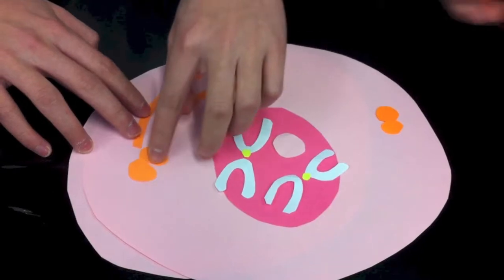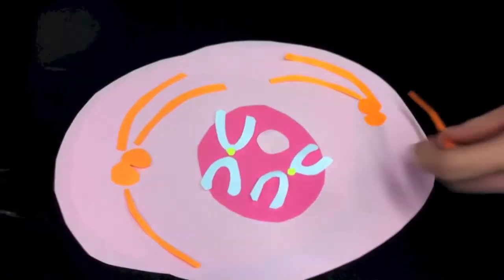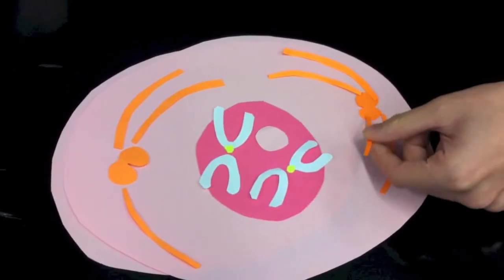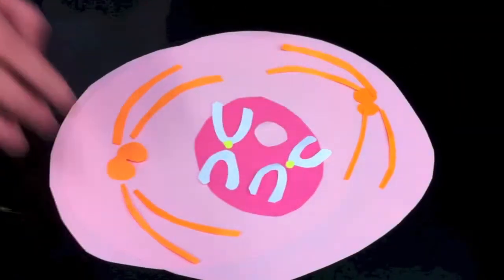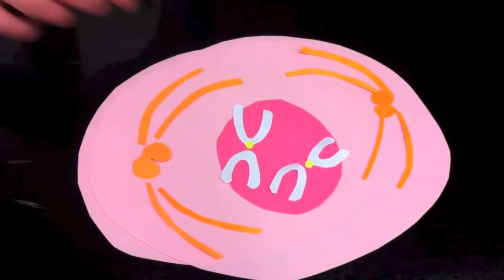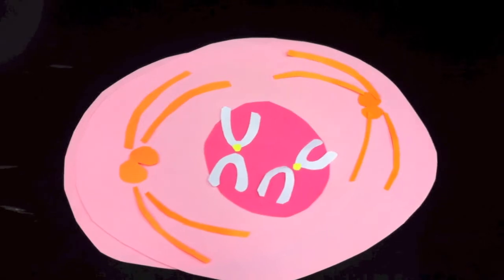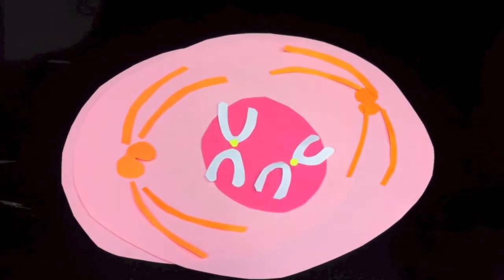During early prophase, duplicated DNA molecules coil up into chromatids, which are then joined together by a centromere to form a chromosome. In animal cells, centrioles move to the opposite ends of the cell, managing tube-like structures made of protein known as spindle fibers. The nucleolus begins to disappear.